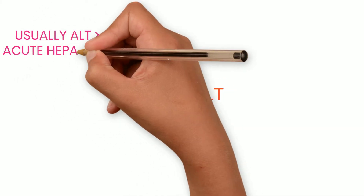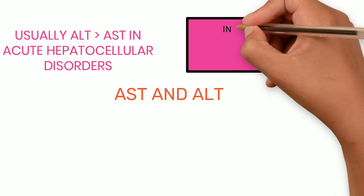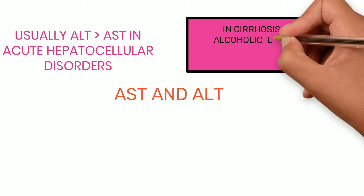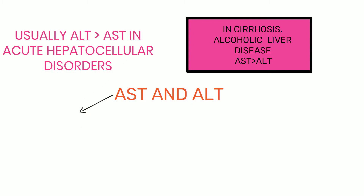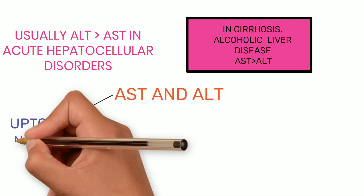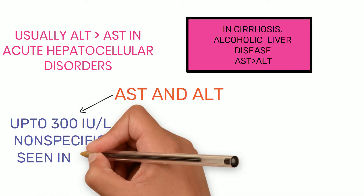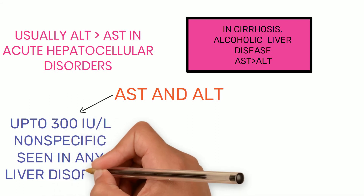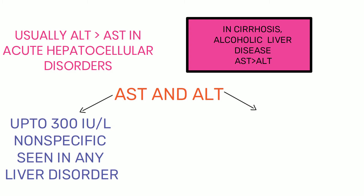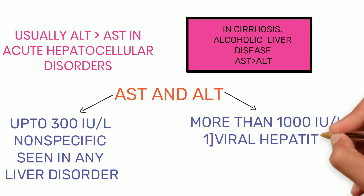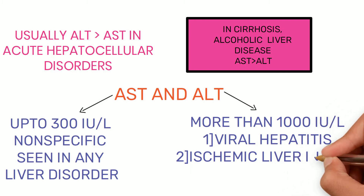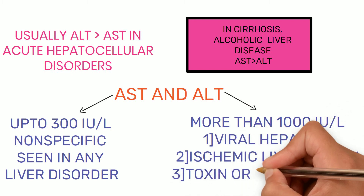In acute hepatocellular disorders, usually ALT is more than AST, but when cirrhosis develops and in alcoholic liver disease, AST is more than ALT. Levels of both up to 300 international units per liter are quite non-specific and may be found in any liver disorder. Even in cholestasis these enzymes may be normal or markedly increased, but high levels above 1000 units per liter are seen in viral hepatitis, ischemic liver injury, and drug or toxin-induced liver injury.